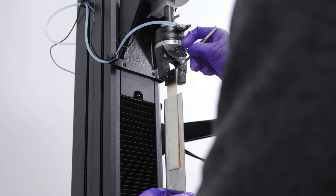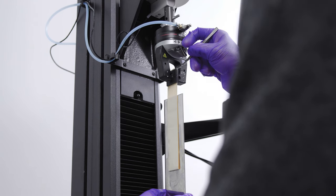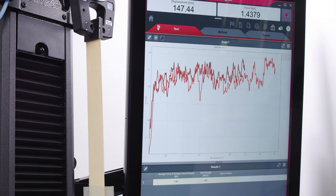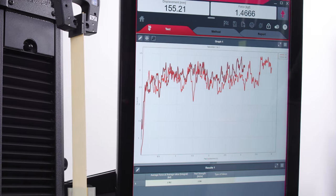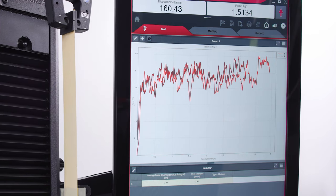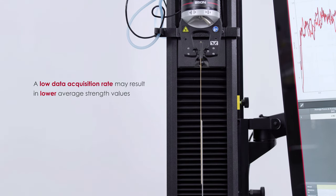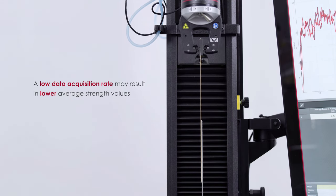Specimens are tested in tension at a 180 degree angle. Because peel testing data is prone to peaks and troughs, the testing system should have a high data acquisition rate. A low data acquisition rate may result in lower average strength values.